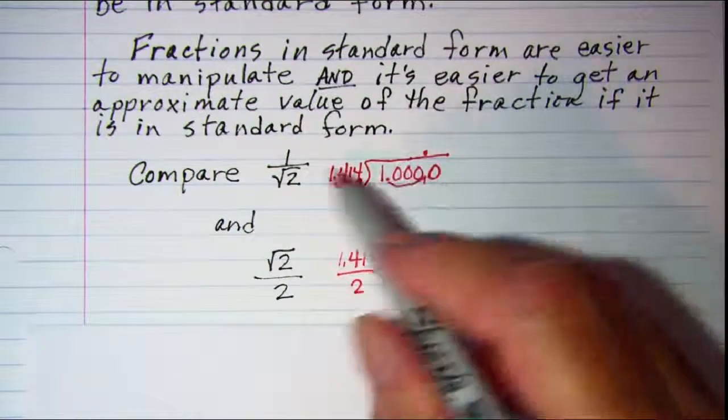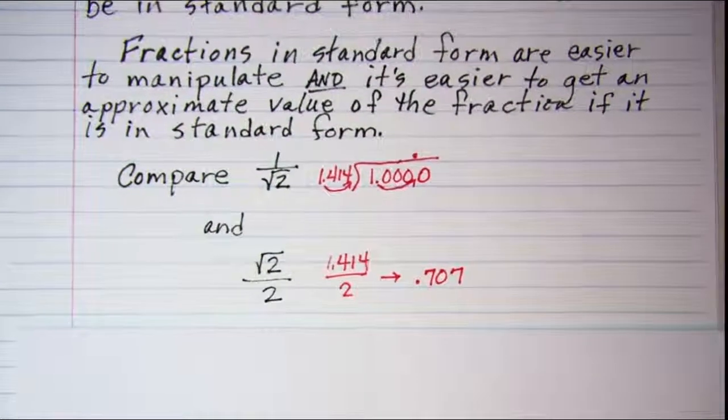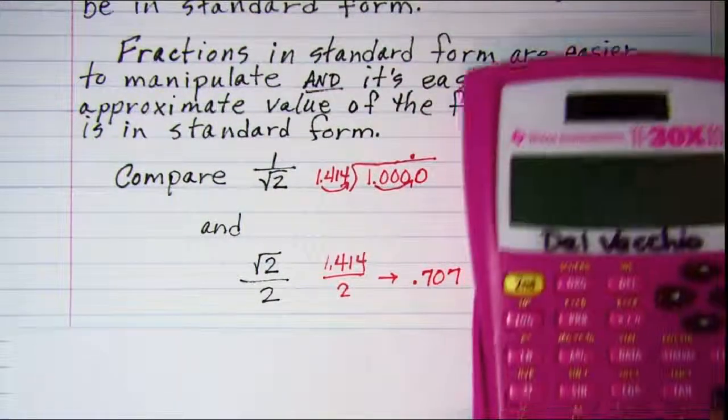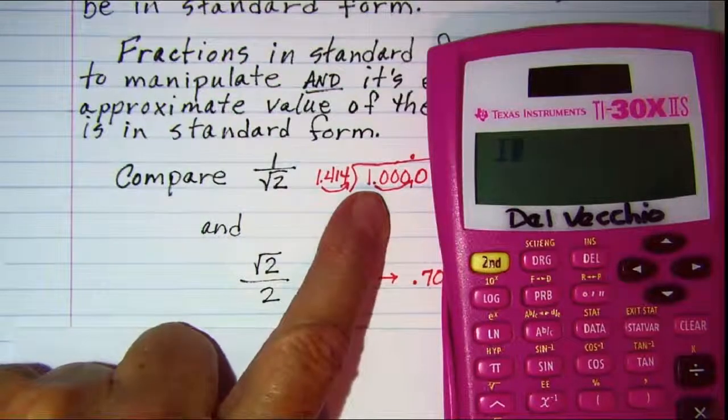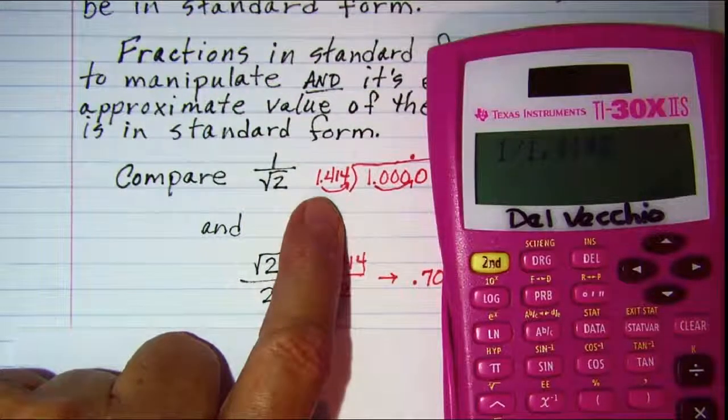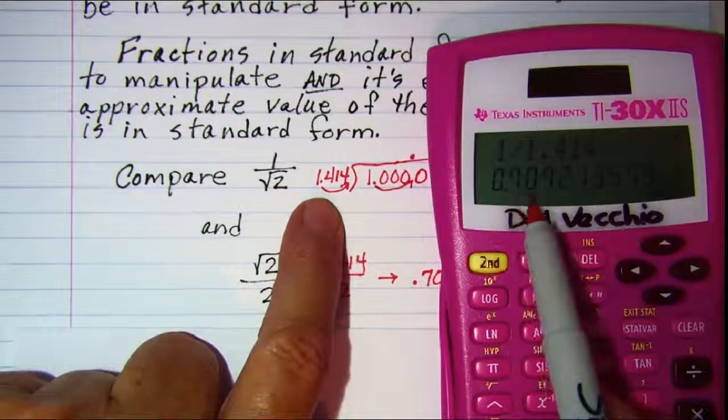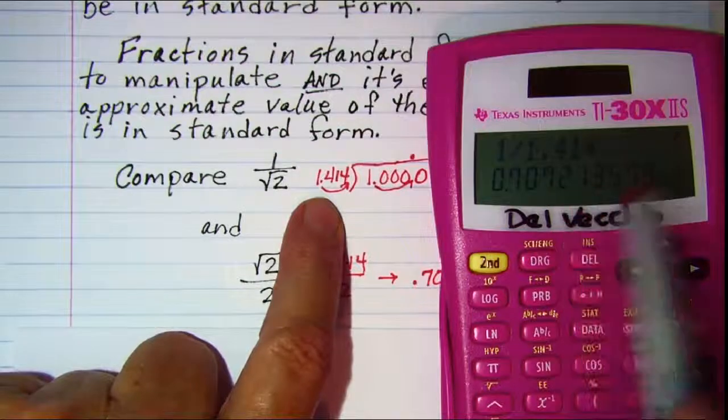Let me just show you that this one also is 0.707 if I did it on my calculator. 1 divided by 1.414 is about 0.707 and so forth.